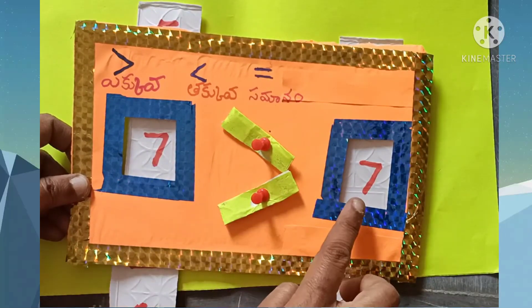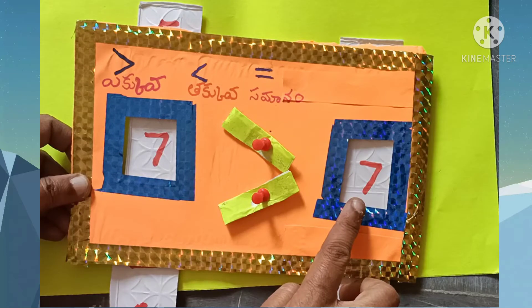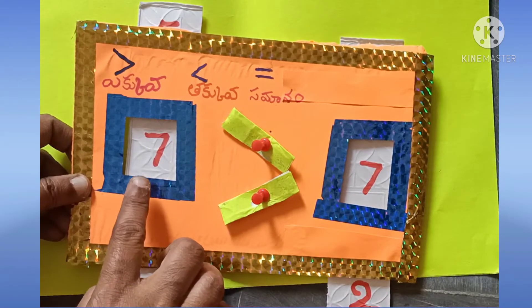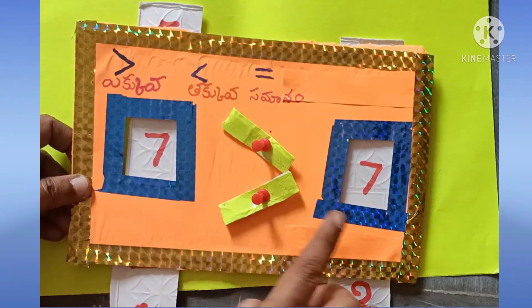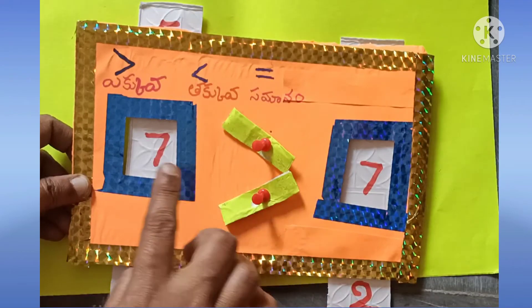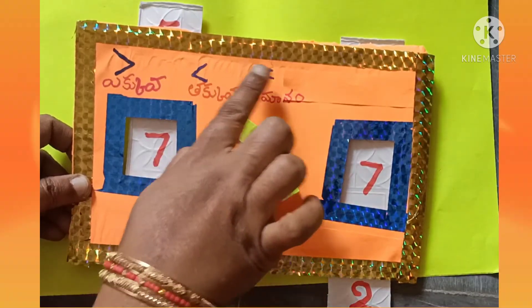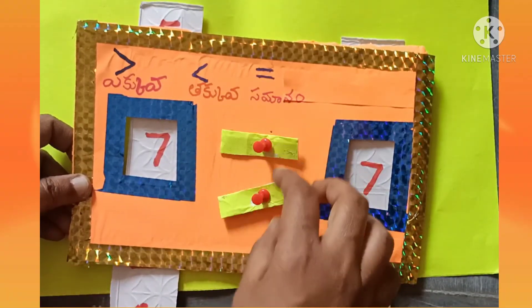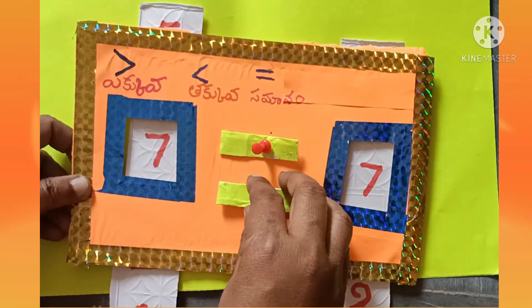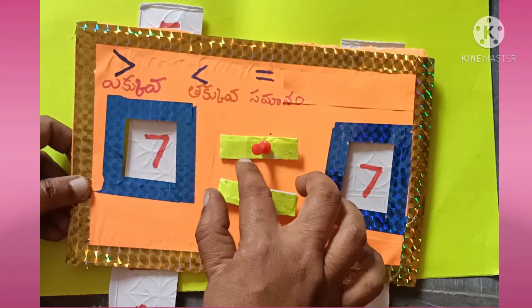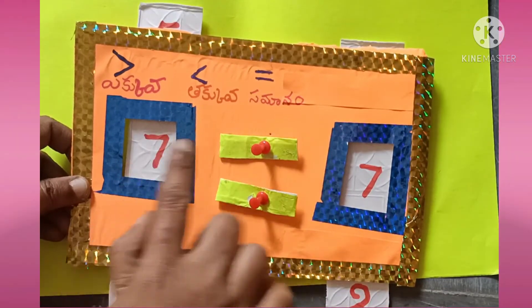Seven and seven. Seven maryu seven aneithi samanam — equal numbers. So we write seven equal to seven.